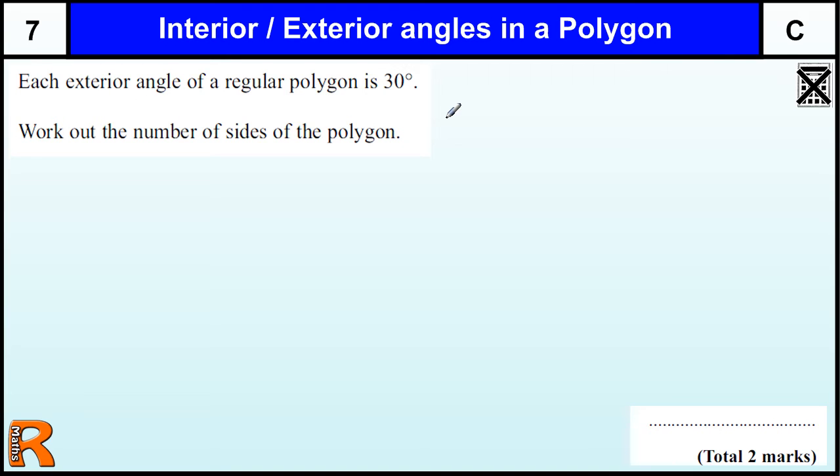Now, this question relies on our understanding of polygons. So if I've got a polygon, that's a shape with straight sides - so this is a hexagon.